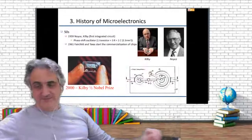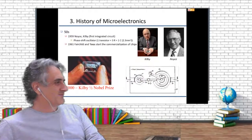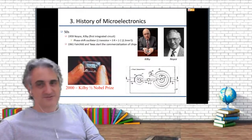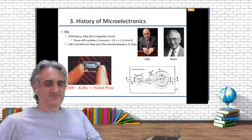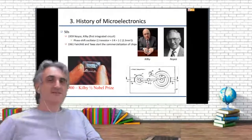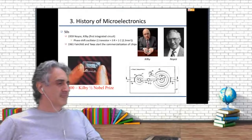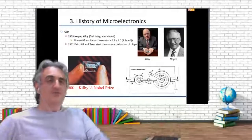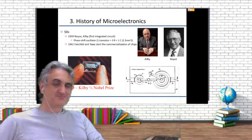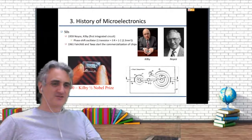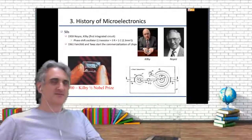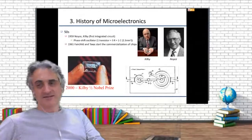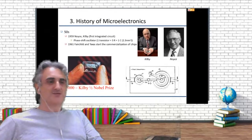People were not happy using only transistors and were looking for more complex things. You have a transistor — much better than a vacuum tube — but what can you do with one transistor? You cannot do many interesting things with just one. If you want to do computing, you need thousands, hundreds of thousands, millions of transistors.